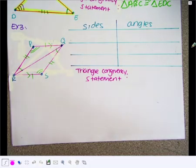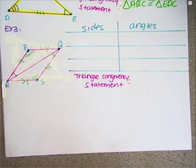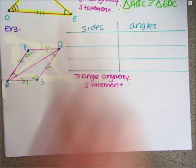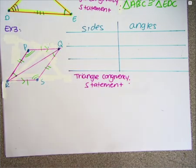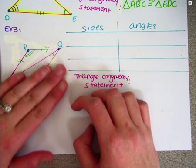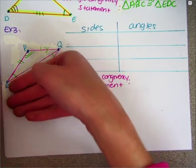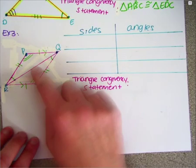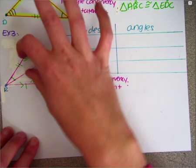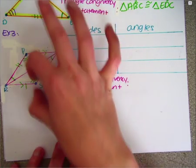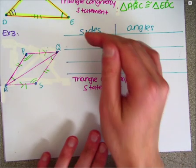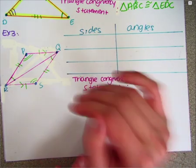We are now tackling Example 3. We're trying to show that the triangles are congruent by showing that all three angles and all three sides are congruent. In this figure, we're looking at the top triangle and the bottom triangle — a line is dividing this parallelogram into two triangles. I must show they are congruent by showing all three sides and all three angles are congruent.